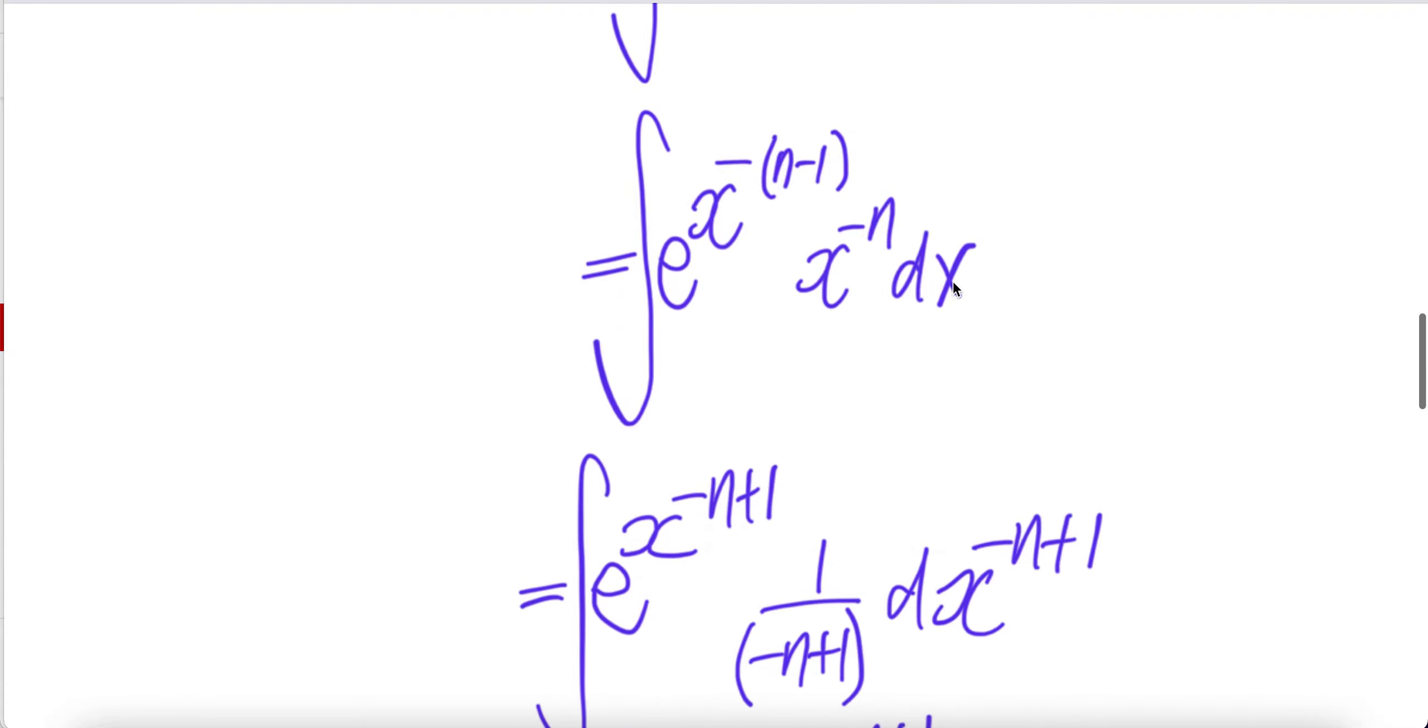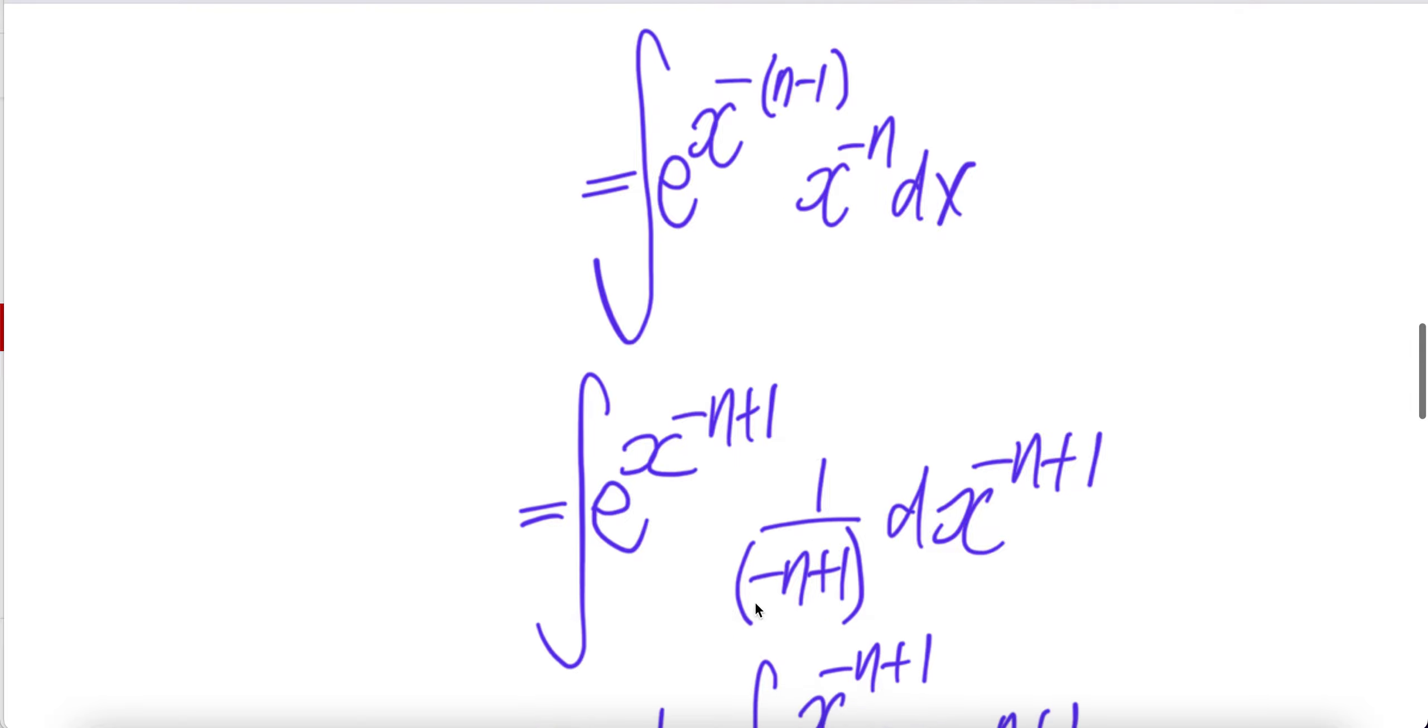Now let us push this into dx, derivative of x to the power negative n plus 1. This comes down, cancel with that, negative n plus 1 minus 1 will get x to the power negative n dx. So this piece here is the same thing as this whole thing.